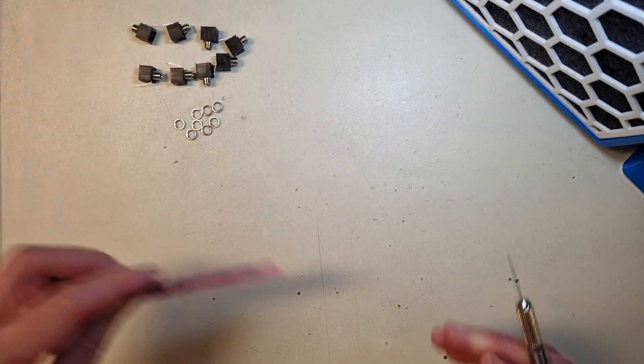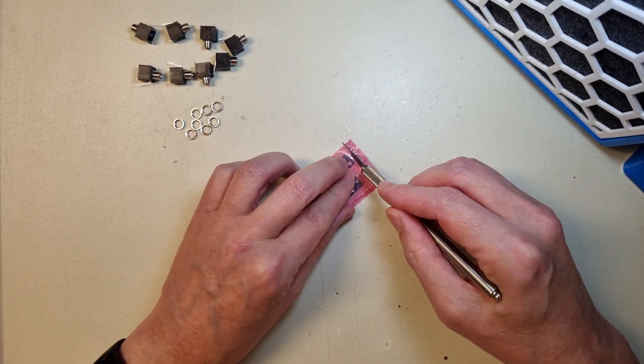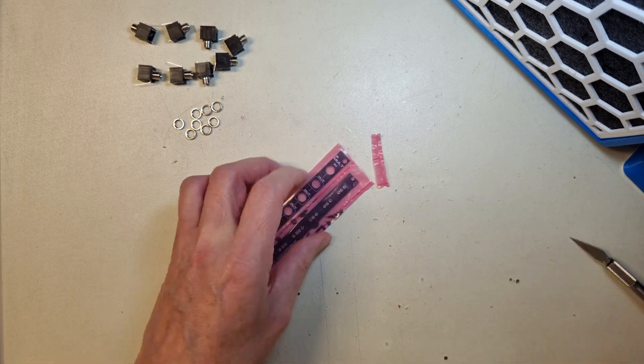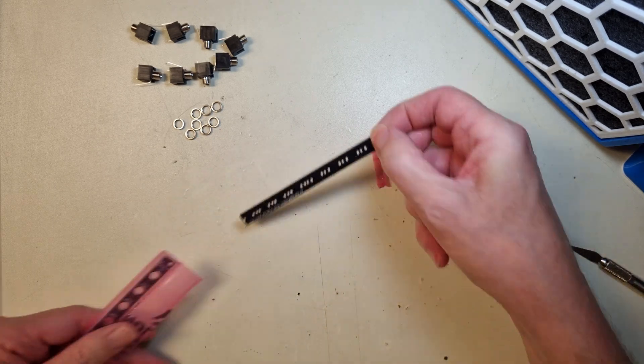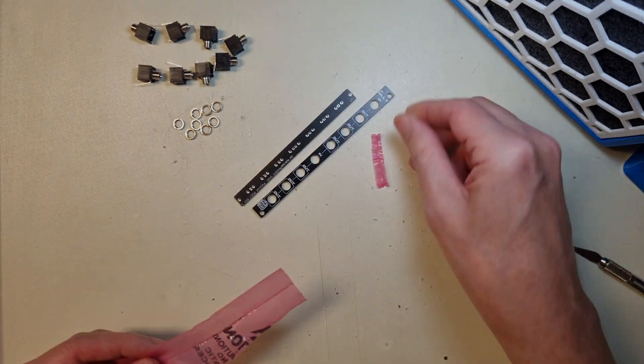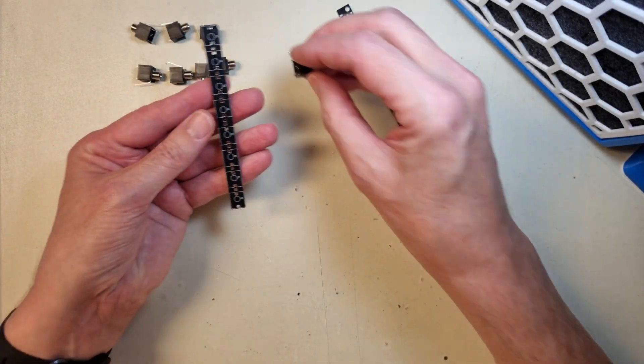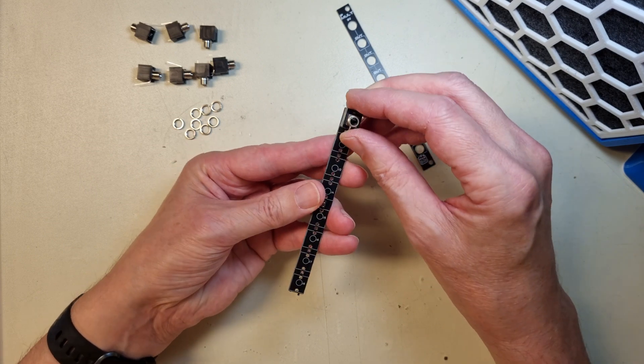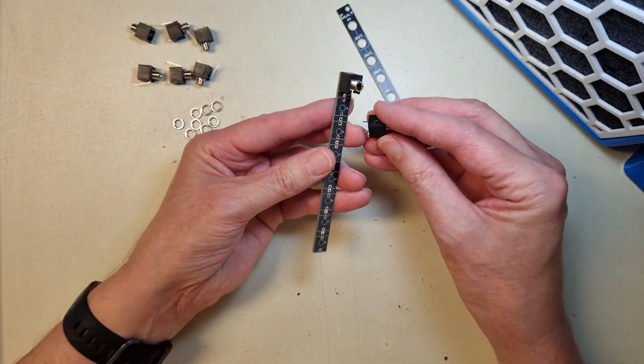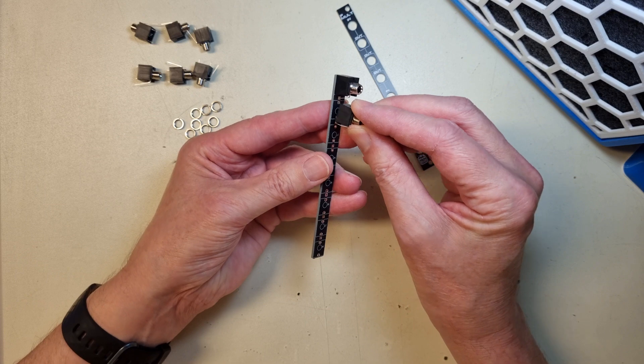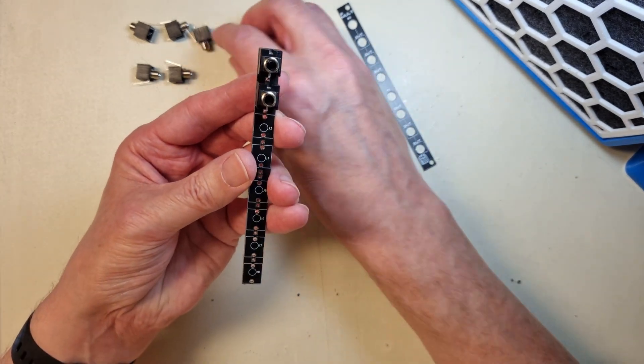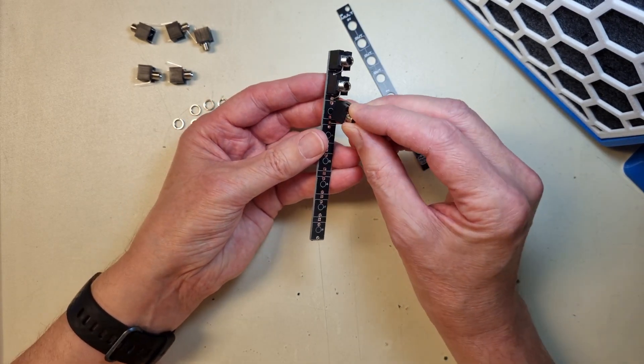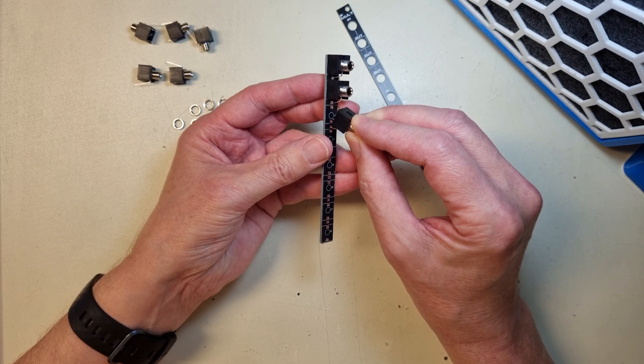The build is very straightforward. Open the bag with the PCBs. Mount the Thonkiconn jacks to the component side of the main PCB. It is the side with the silkscreen markings with squares and circles. The long ground lead on the side of the connector housing should go into the soldering pad outside the square.